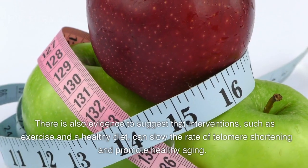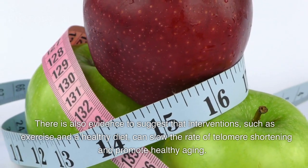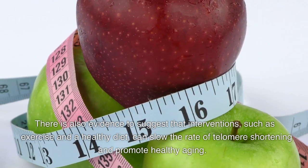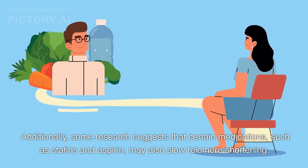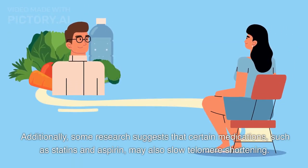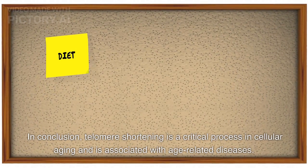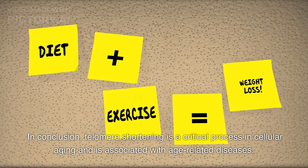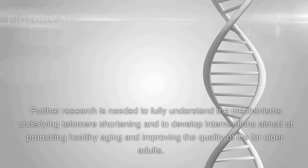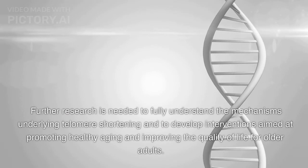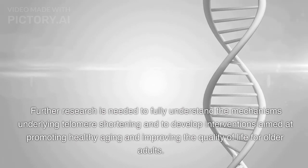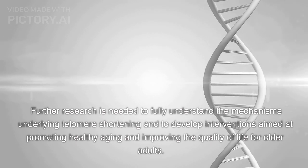There is also evidence to suggest that interventions such as exercise and a healthy diet can slow the rate of telomere shortening and promote healthy aging. Additionally, some research suggests that certain medications, such as statins and aspirin, may also slow telomere shortening. In conclusion, telomere shortening is a critical process in cellular aging and is associated with age-related diseases. Further research is needed to fully understand the mechanisms underlying telomere shortening and to develop interventions aimed at promoting healthy aging and improving the quality of life for older adults.